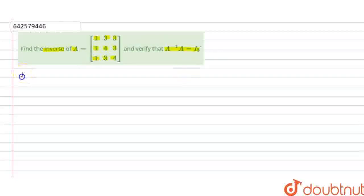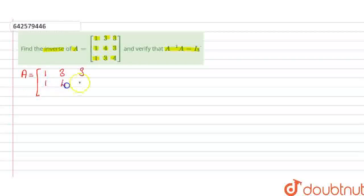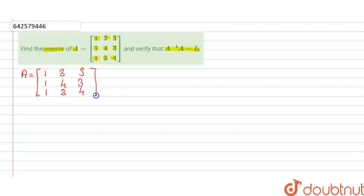So first I will write down A over here. A is equal to matrix of 1, 3, 3, 1, 4, 3, 1, 3, 4. Now we need to find its inverse. They have asked us its inverse and then we have to prove that A inverse A is equal to I₃.